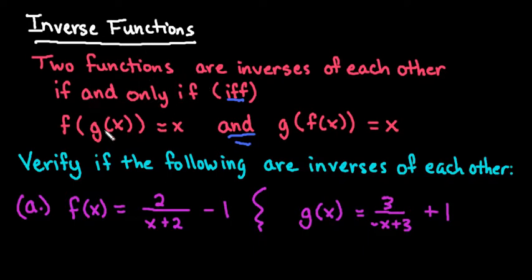What you have to do is take your g of x equation and plug it into your f equation, and after you simplify it, if it equals x then you know that they are inverses of each other. If it does not equal x then you can stop there, because they can't be inverses if both of them are not x.